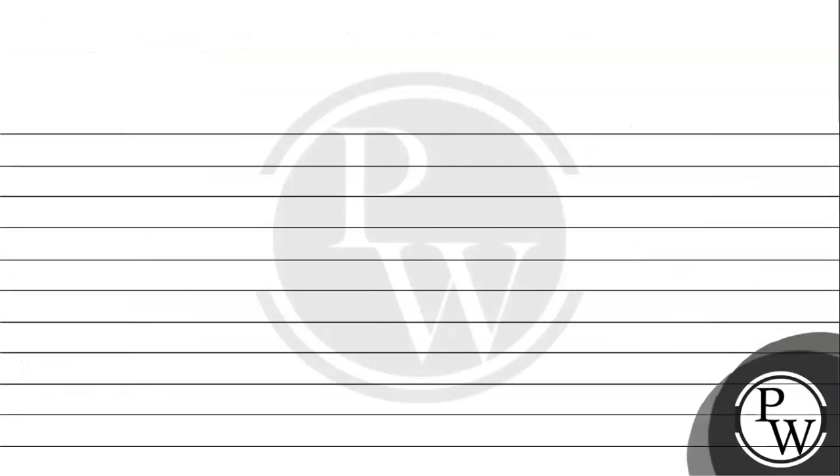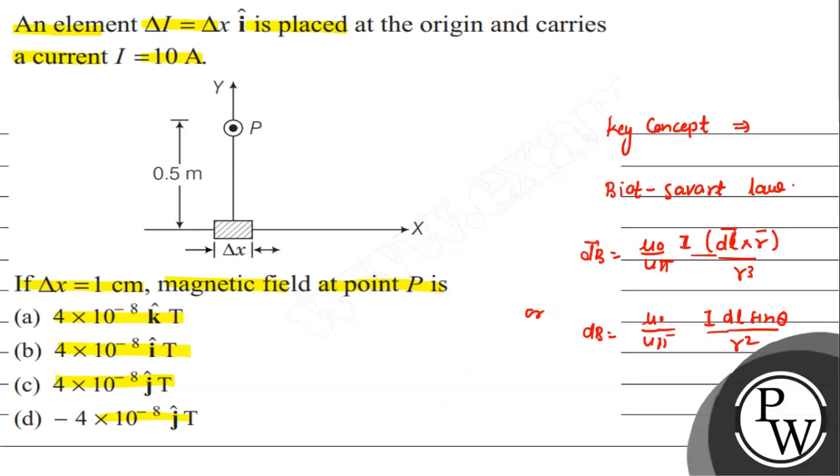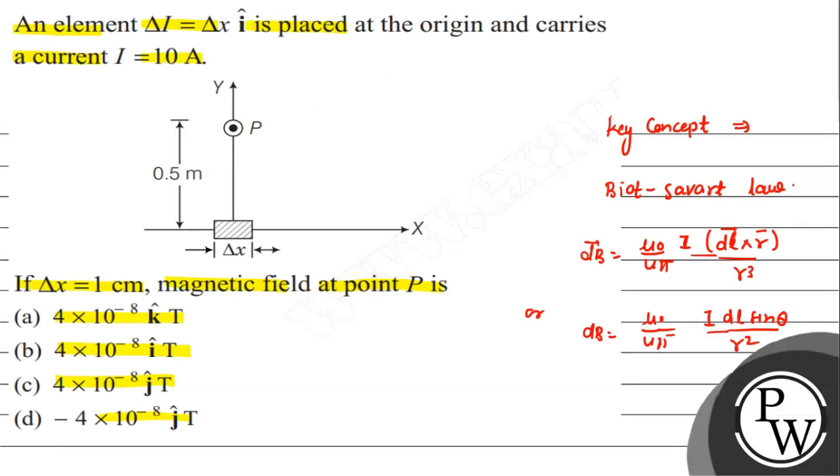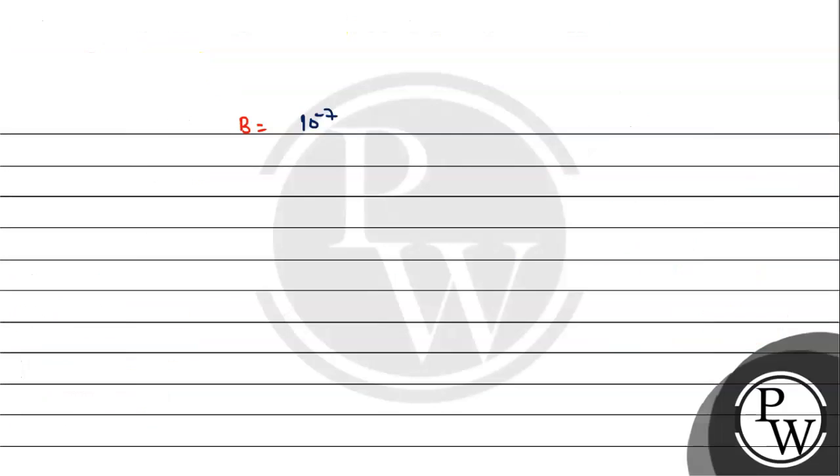Here μ₀/4π = 10^-7. The angle between the current element and point P is 90 degrees, so sin θ = 1. The current I = 10A and Δx = 1 centimeter = 1×10^-2 meters.